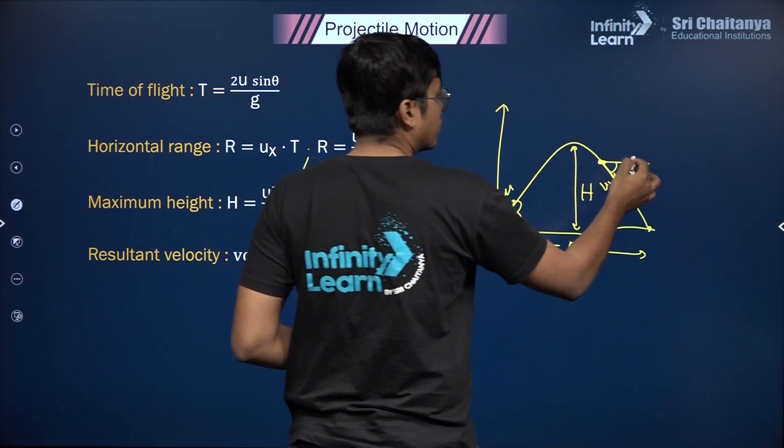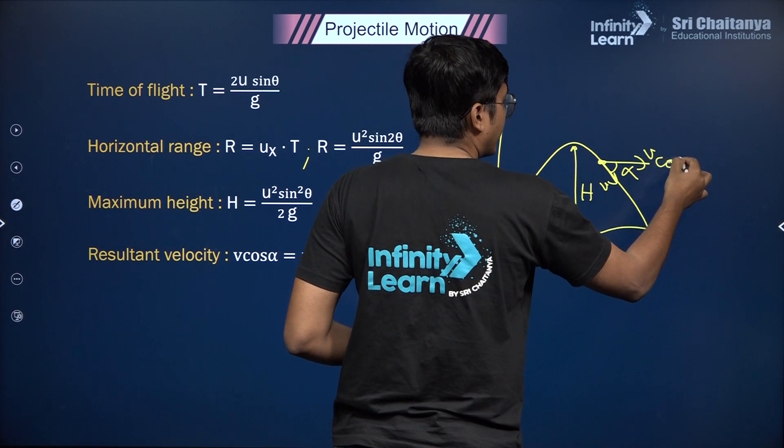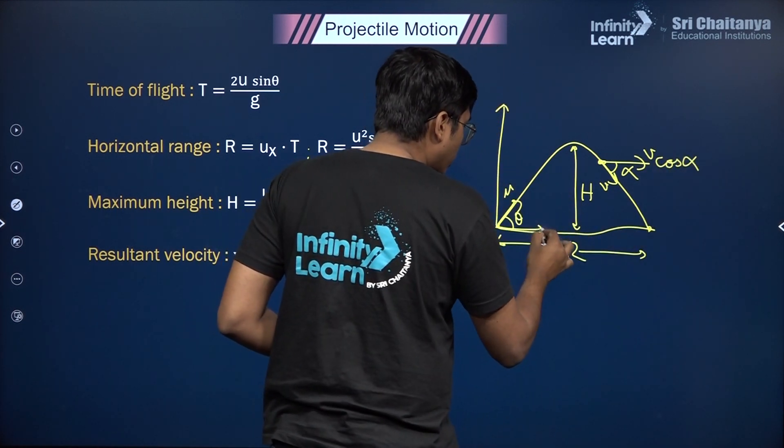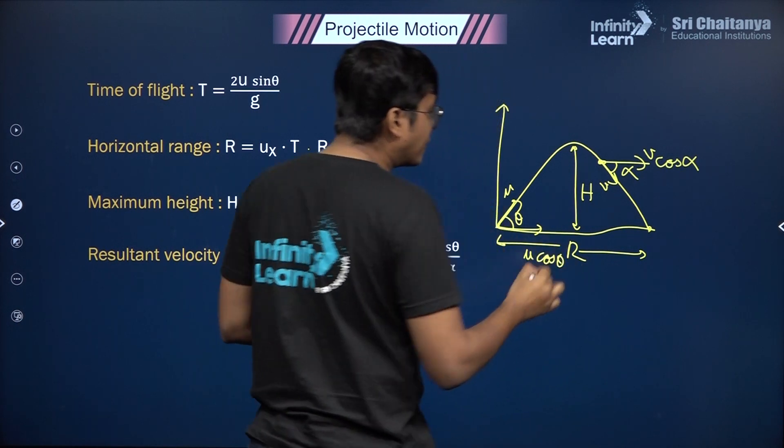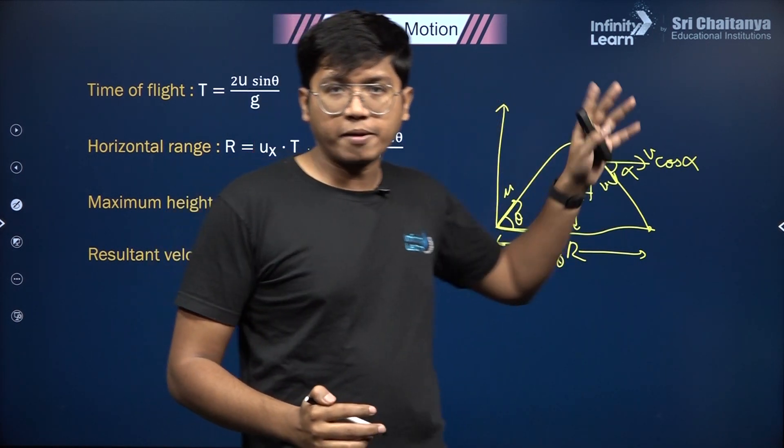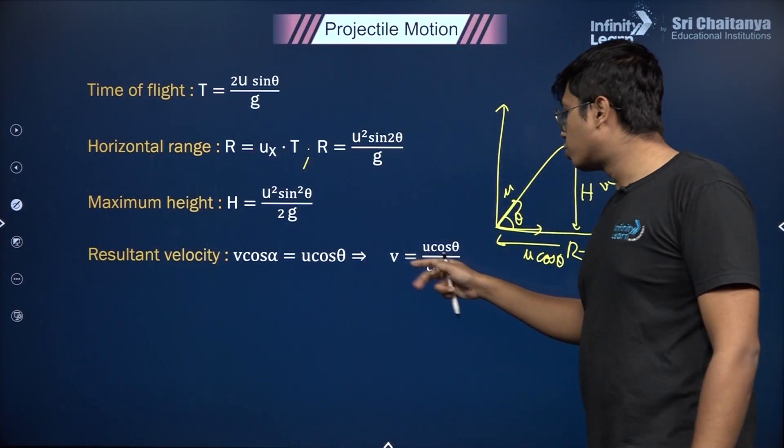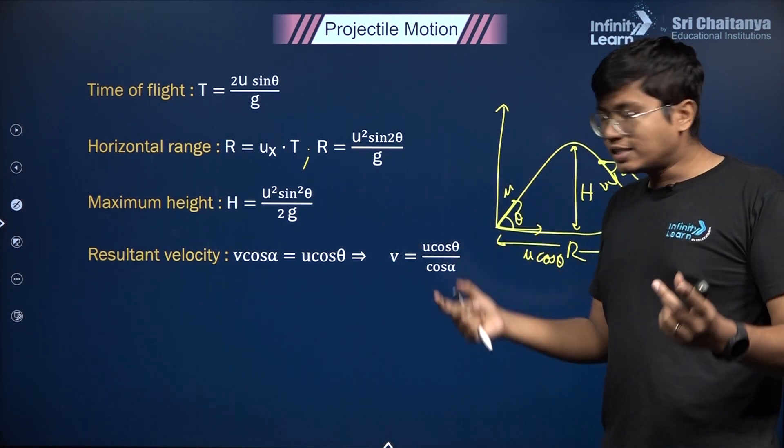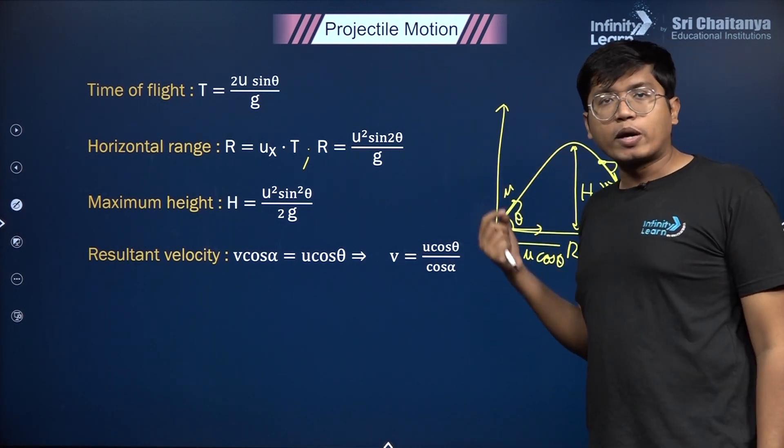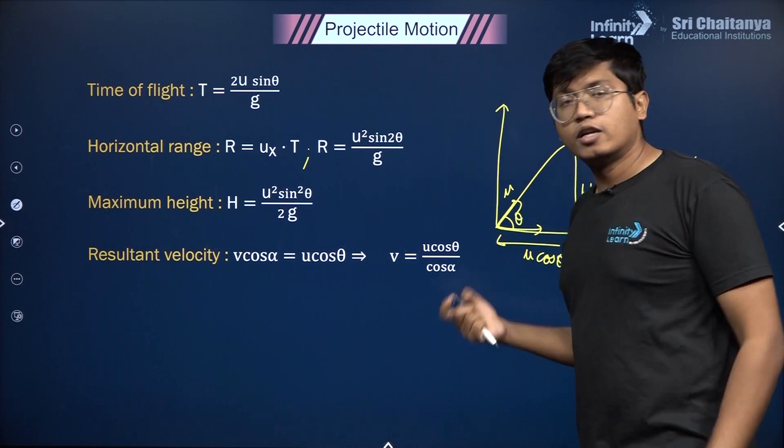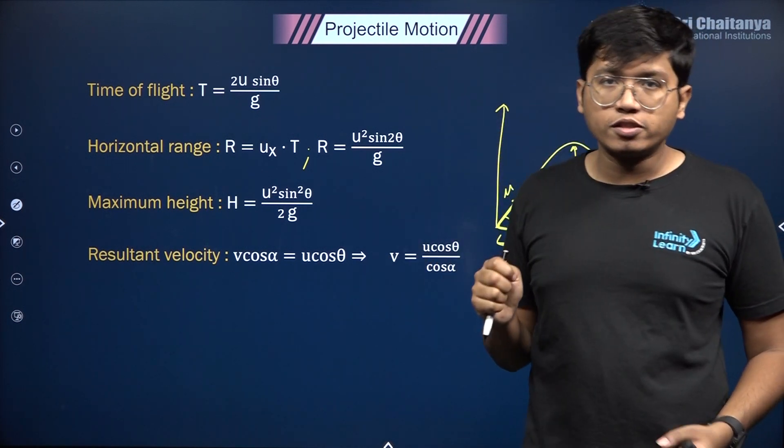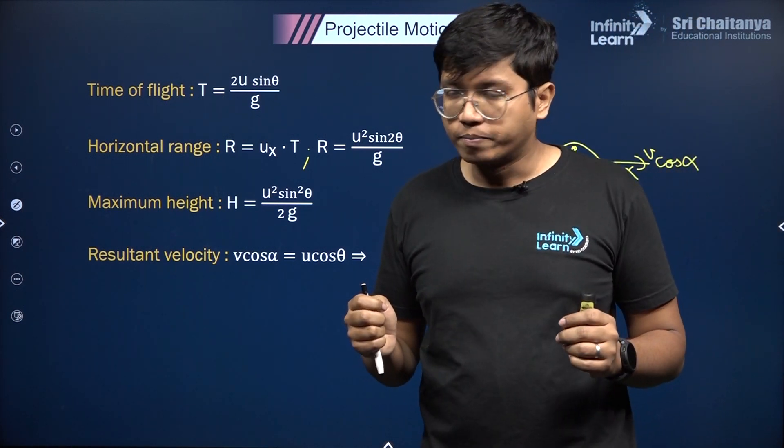v cos α has to be equal to u cos θ. Why? Because the horizontal component v cos α is just going to be the horizontal component u cos θ because that does not change, it remains the same. So v cos α = u cos θ can help you easily find what the speed is at any one point or what the angle of inclination of that projectile is.